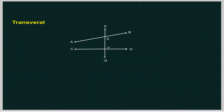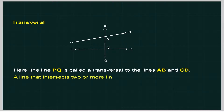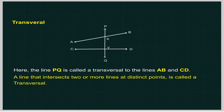Transversal. AB and CD are two lines in the same plane. PQ intersects AB at X and CD at Y. The line PQ is called a transversal to the lines AB and CD. A line that intersects two or more lines at distinct points is called a transversal.